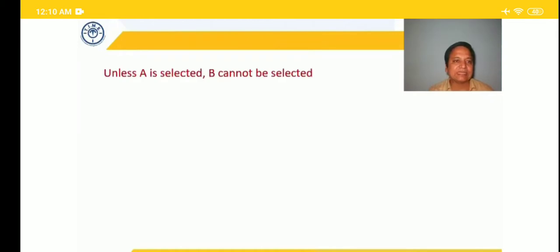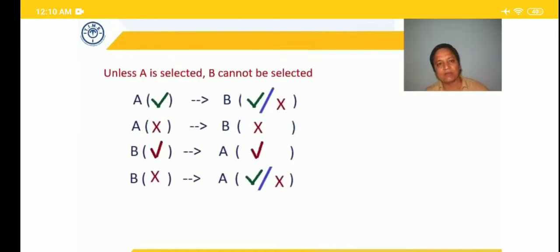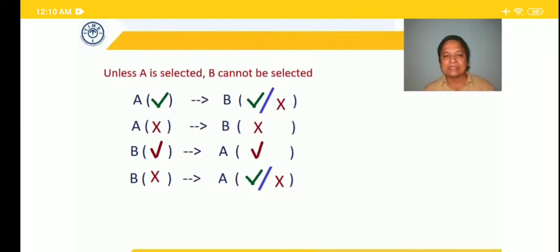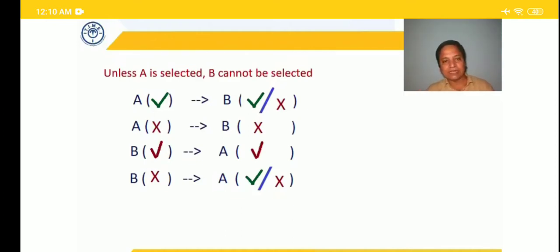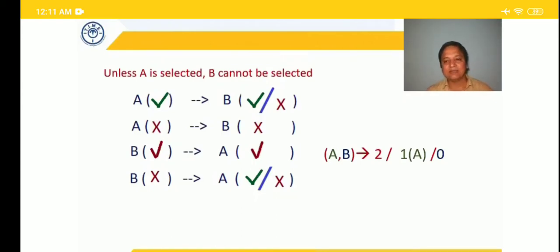Moving to the next type: 'Unless A is selected, B cannot be selected.' A is necessary for selection of B. B is not necessary for selection of A. So: if A is selected, B may or may not be selected. If A is not selected, B is also not selected. If B is selected, it implies A is already selected. If B is not selected, A may or may not be selected. In short form for 'unless': either both are selected, or only A is selected, or none are selected.